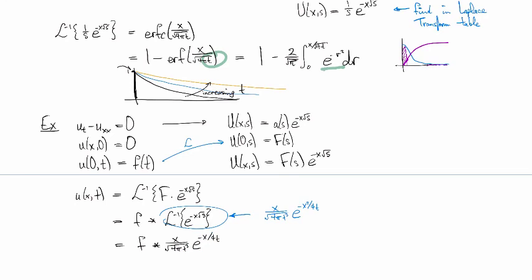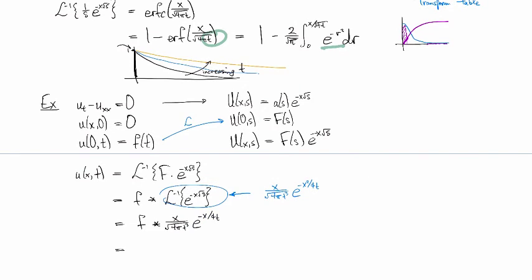Okay. And so then, that's the thing that we're going to need to convolve against down here. And so the general form of the solution for this one is going to be the integral from 0 to t for our Laplace convolution x over square root 4πτ cubed e to the minus x squared over 4τ times f(t minus τ) dτ. And then I just realized I've been writing t's instead of τ's. Sorry.